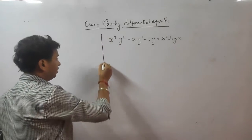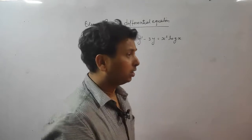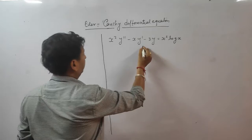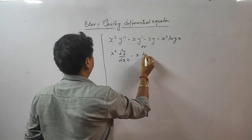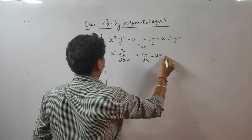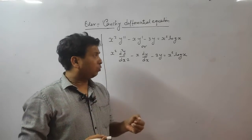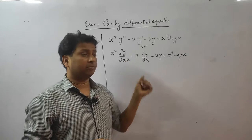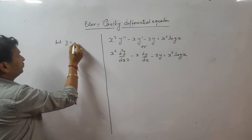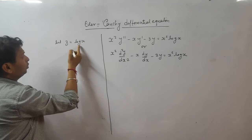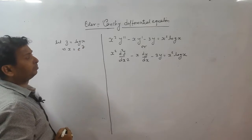So its procedure — I will explain some theory, then I will teach how we solve. We can write this as: x² d²y/dx² - x dy/dx - 3y = x² log x. We are going to change the independent variable x in terms of z. Let z = log x.